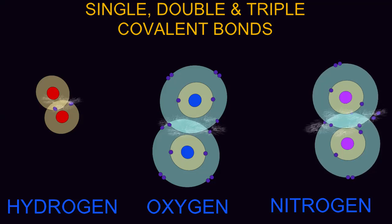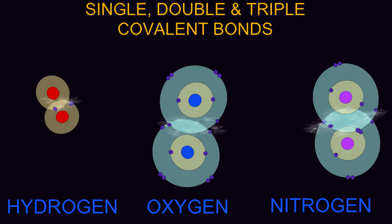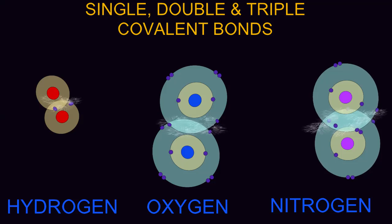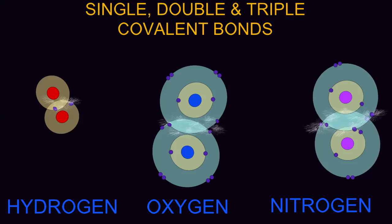When nitrogen atoms react with each other, they form triple covalent bonds, in which each atom shares three electrons with its neighbor. This is a very strong bond, and thus nitrogen gas, N2, consists of two nitrogen atoms bound through triple covalent bonds.